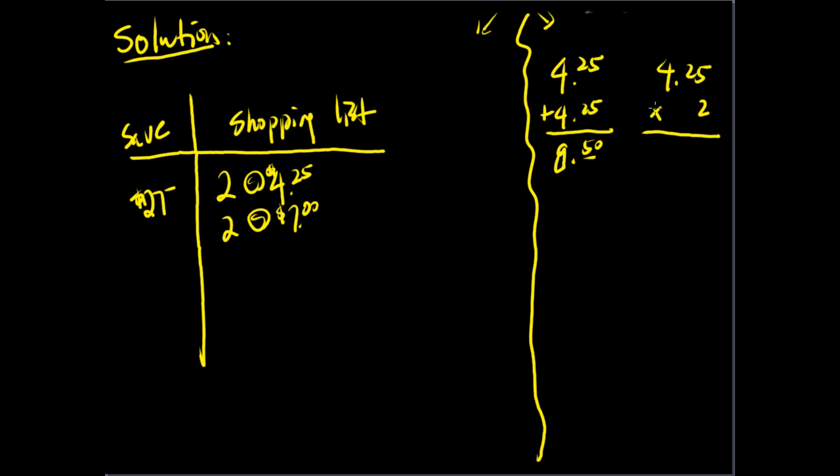But imagine if you have seven hairbands you want to buy. You don't want to do 4.25, add to 4.25, all the way to seven times. Now it'll take too long. So here's how we do the multiplication. 2 times 2 is 4, plus 1 is 5. And here's our decimal. So both of them have the same answer. So here we need $8.50 to buy the hairbands.